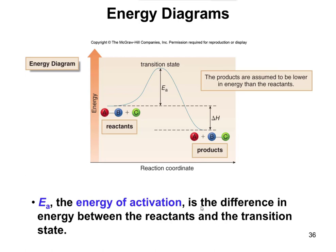The energy necessary to break the bonds is what the transition state is. On all the graphs, we start at the reactants, go up to a peak, and then come down — and that peak is called the transition state. It's the top level of energy in a reaction. Think of a roller coaster: there's an initial input of energy to get you to the top of the big hill. Once you're at the transition state, you have enough energy to finish the ride.